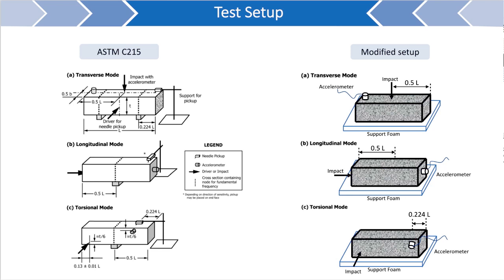One difference between the ASTM C215 standard test setup and the modified setup used for this testing are the support conditions. ASTM C215 details different support locations to allow for free vibration in each mode. The modified test setup used for this testing opts to use a support foam instead, which allows free vibration in a simpler way. Every other aspect of this setup follows ASTM C215 directly.